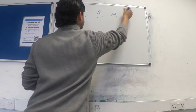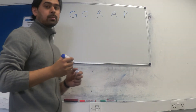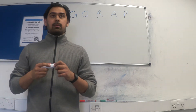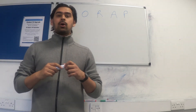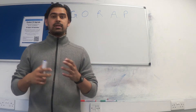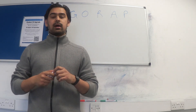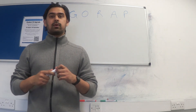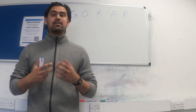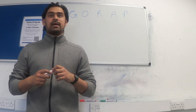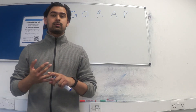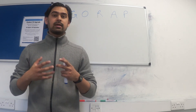The G stands for glomerulonephritis. The O stands for oedema, because you get swelling of the joints. The R stands for rash — you get a characteristic skin rash. The A stands for arthritis, so you get pain in the knees and ankles and you can also get swelling.